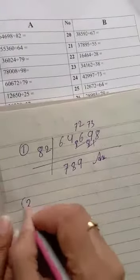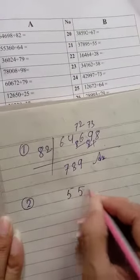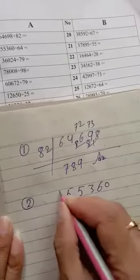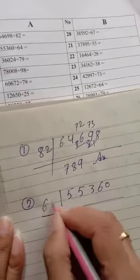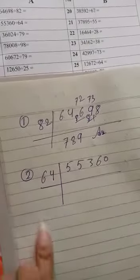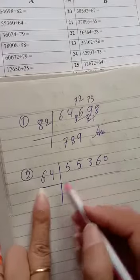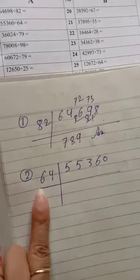Question number 2. I am doing 55,360 divided by 64. First, this is 55. 6 times 5 is 30, 6 times 8 is 48.